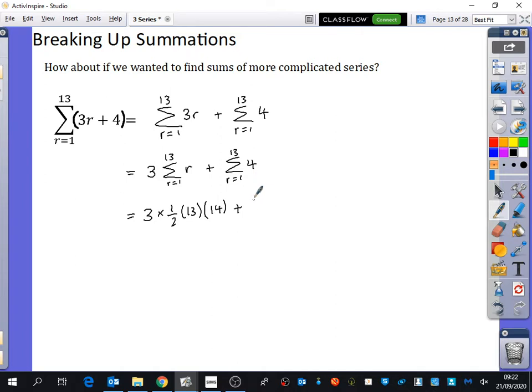And what's the sum from R equals 1 to 13 of 4? 52. 52. 13 times 4. Remember, it's just this multiplied by n. Yeah, it is right, 52. 13 times 4 is 52. And then all we need to do is put that into the calculator and we find out what we've got. So let's see, what's that going to be? 39 times 7.